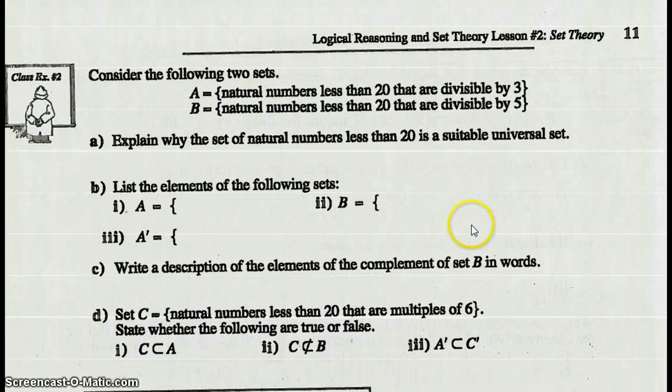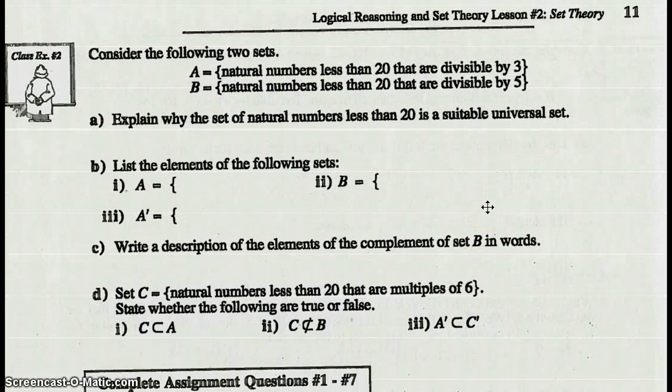Consider the following two sets. A, natural numbers less than 20 that are divisible by 3. And B, natural numbers less than 20 that are divisible by 5. Explain why the set of natural numbers less than 20 is a suitable universal set. Well, because all the elements being considered are in that universal set.